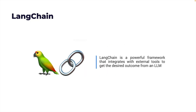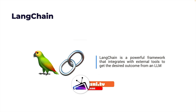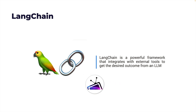LangChain is essentially a framework that integrates a variety of external tools to orchestrate the prompt engineering that's needed to get the desired outcome from the LLM. It is a layer that sits in between your application and the LLM, and it also manages a variety of building blocks that are essential to build applications like chatbots, summarization tools, or Q&A applications and so on.